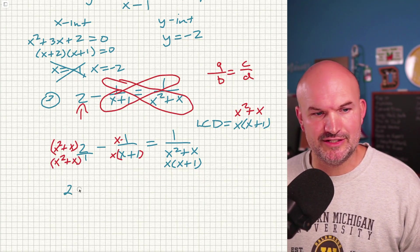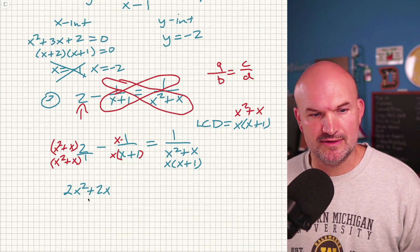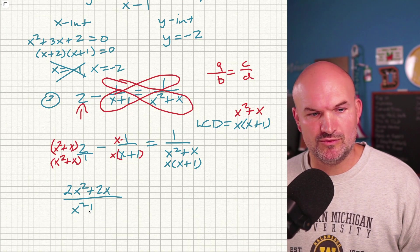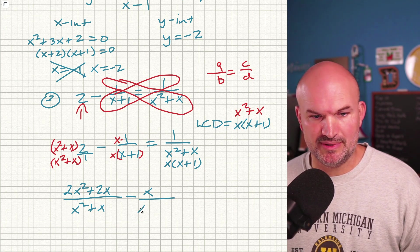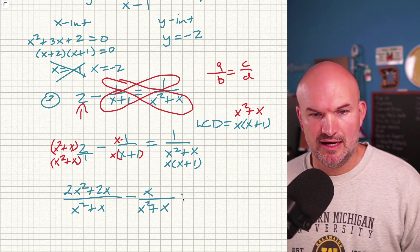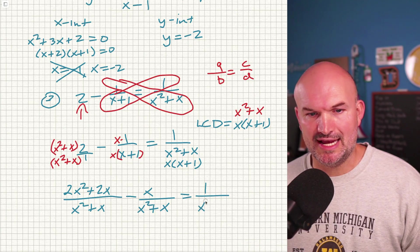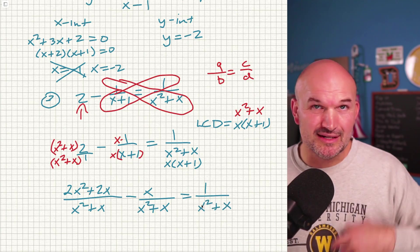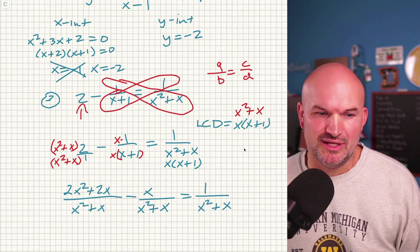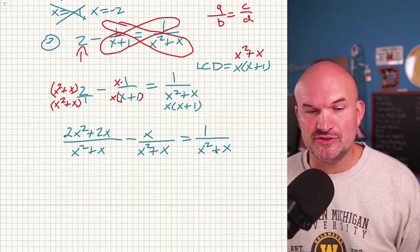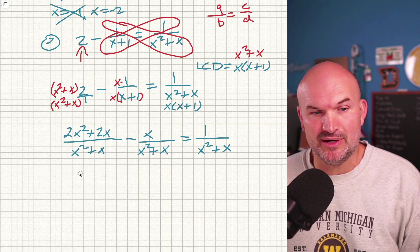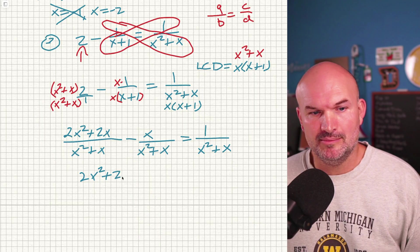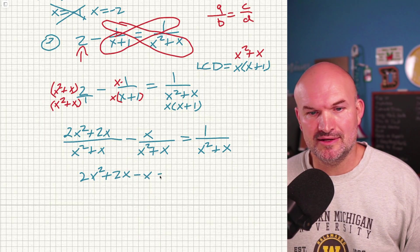OK, so what is that going to give us? Well, that's going to give me 2X squared plus 2X all over X squared plus X minus X over, if you multiply that, that's going to be X squared plus X, and then equal to 1 over X squared plus X. Now, you could multiply everything times X squared plus X, and what would happen is you'd get rid of all your denominators. So that's just going to leave me with my numerator, which is 2X squared plus 2X minus X equals 1.